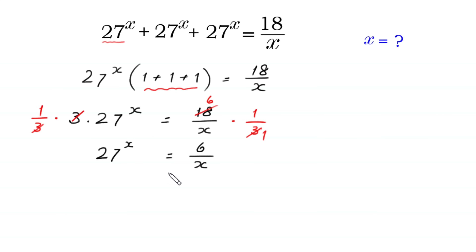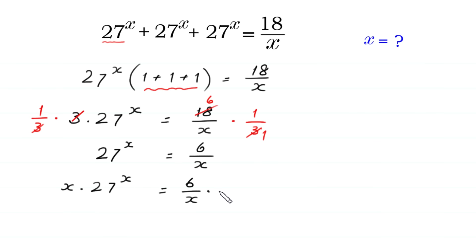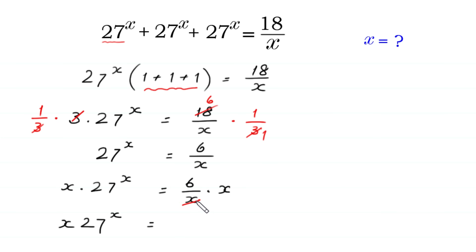Now we multiply both sides of this equation by x. So x times 27 to the power x is equal to 6 over x times x. The x cancels on the right side, leaving x times 27 to the power x is equal to 6.